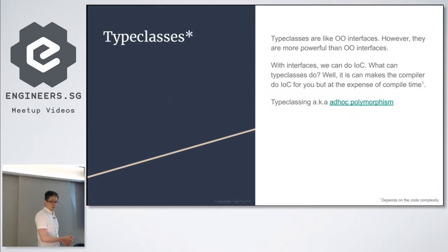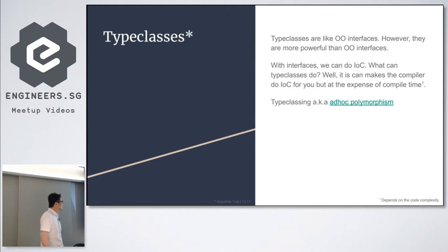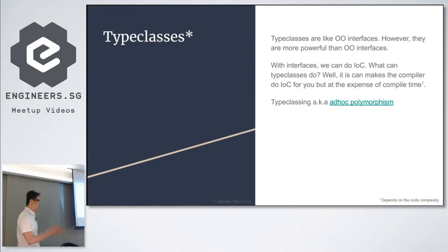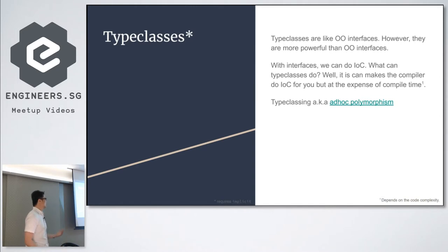If you are not aware of what type classes are — in a way they are like interfaces, OO interfaces, if you're coming from object oriented programming. If you're coming from Java, we use a lot of interfaces, especially with Spring. When you use Spring, you talk about IOC. Type classes are not much different from that in terms of usage, and they actually have IOC but instead of checking during runtime, they check during compilation time.